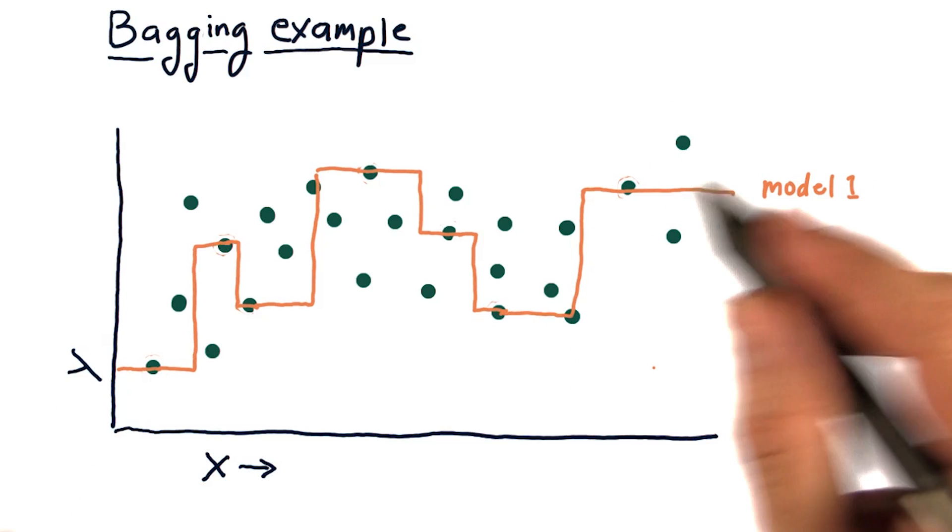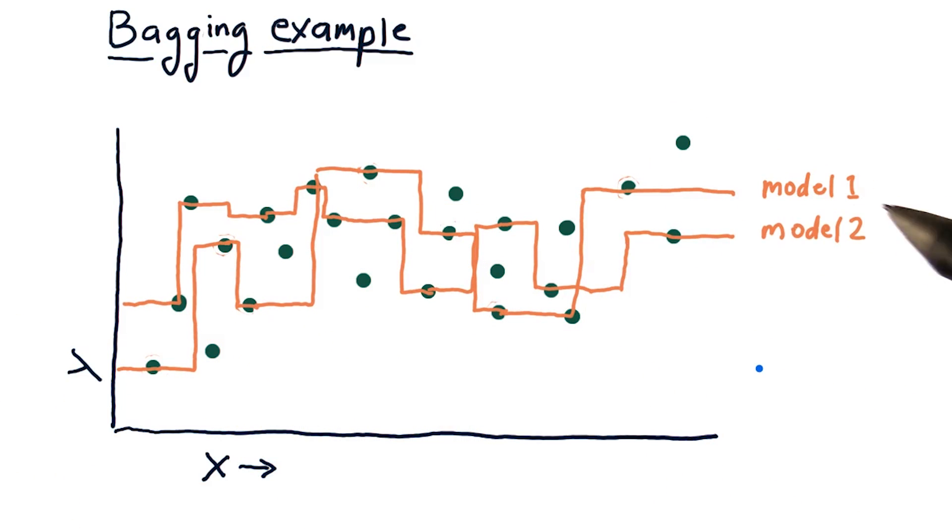Then we draw some more data and we have another model. So our other model, model two, is somewhat overfitting as well.